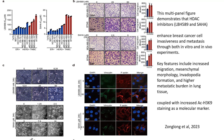In summary, this data reveals that HDAC inhibitors like LBH589 and Saha increase breast cancer cell migration, mesenchymal morphology, lamellipodia formation, and metastatic potential. These findings raise important questions about the unintended consequences of these inhibitors in cancer therapy.